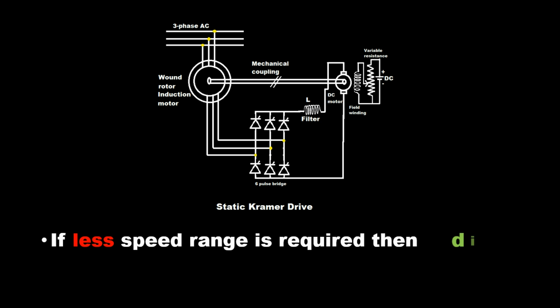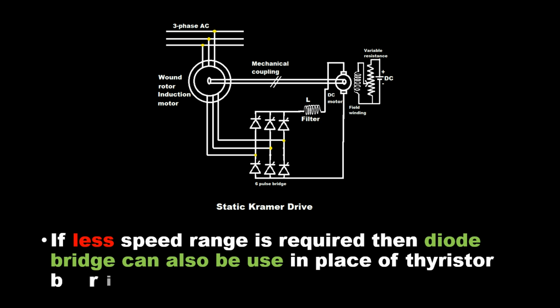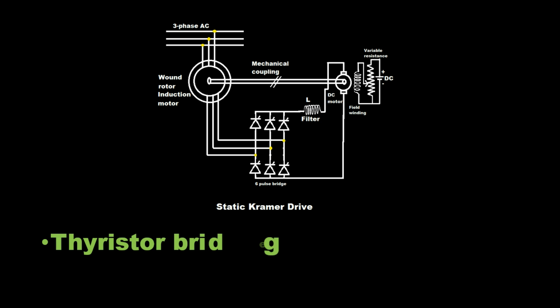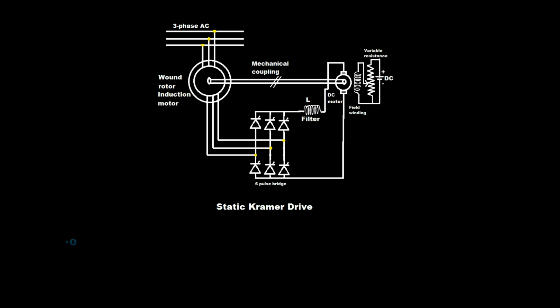If less speed range is required, then diode bridge can also be used in place of thyristor bridge. Thyristor bridge is used for more speed range control.